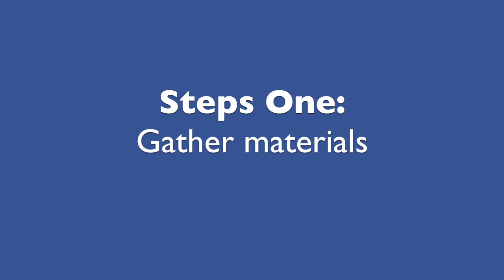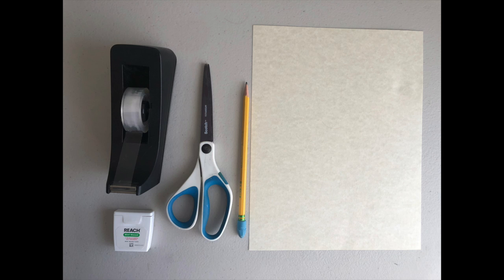Step one, gather your materials. You can use any type of materials you want. Just make sure you get your parents' permission first. For my design, I decided to use tape, scissors, a pencil, a piece of cardstock, and dental floss. I used dental floss because I didn't have any yarn or rope. Otherwise, I probably would have used that.